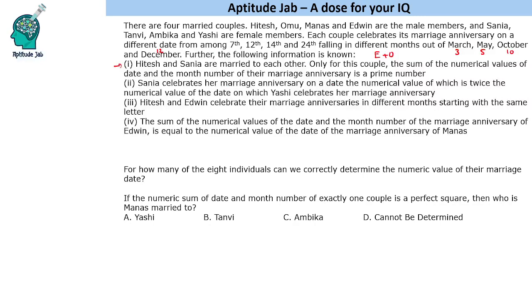Sanya celebrates her marriage anniversary on a date whose numerical value is twice the numerical value of the date on which Yashi celebrates her marriage anniversary. If you look at the values, 7th and 14th, or 12th and 24th — so we can have two possible values: either 24th and 12th, or 14th and 7th. Can't figure it out yet, let's read the next clue.